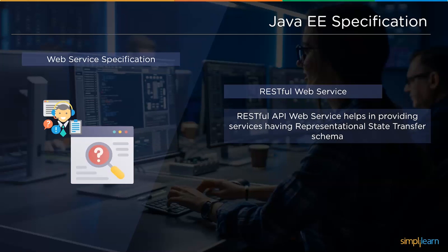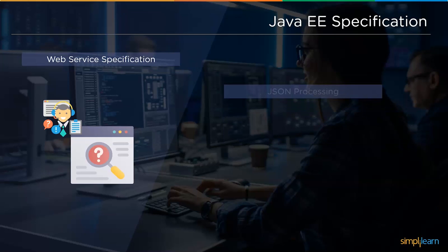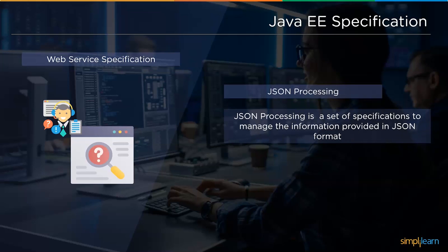Now we enter the web service specification. The first is RESTful Web Services — the Java RESTful API provides services having a Representational State Transfer schema. Next we have JSON Processing: the Java API for JSON Processing is a set of specifications to manage information provided in a JSON format.